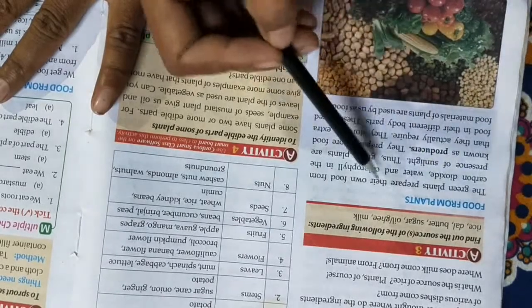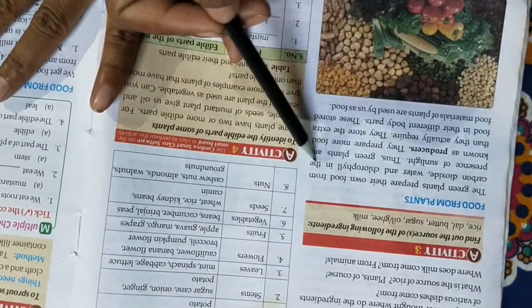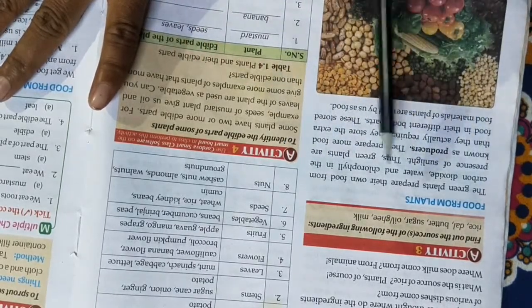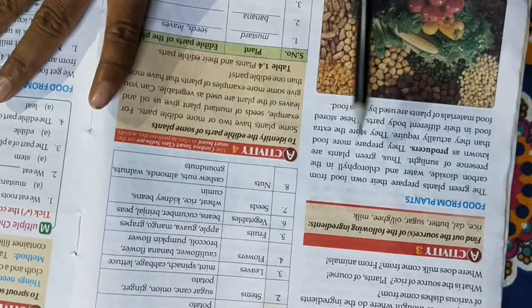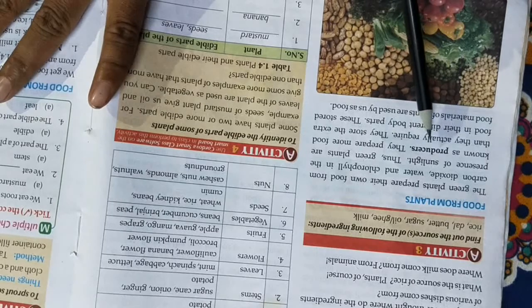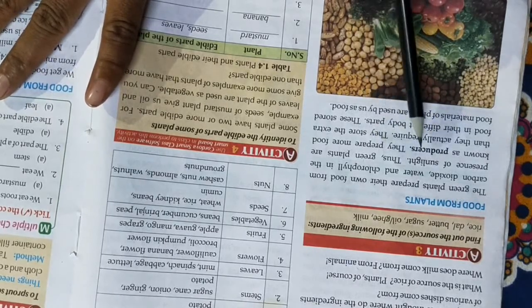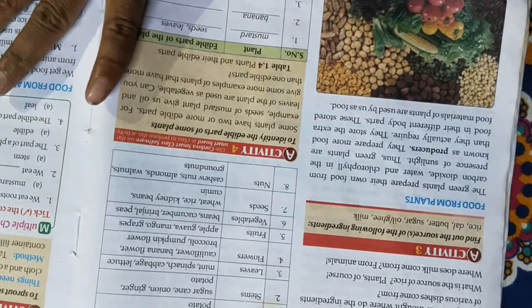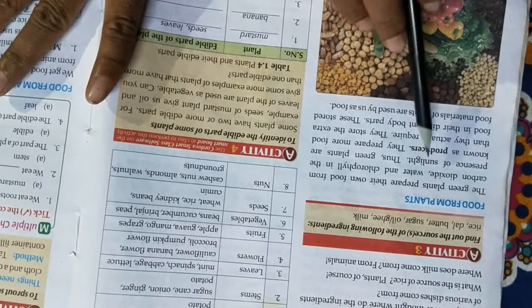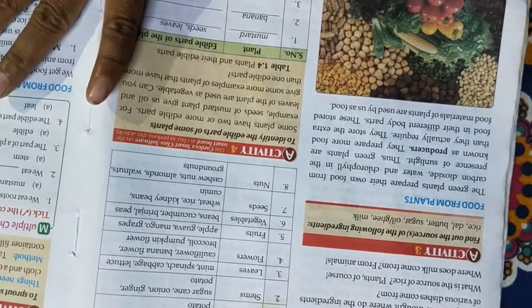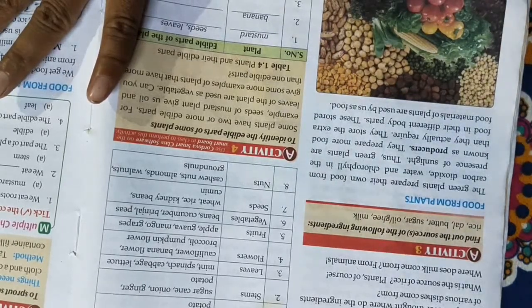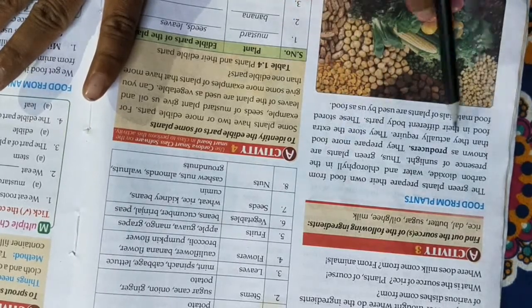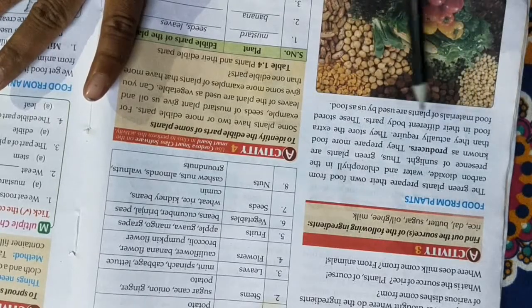Food from plants: The green plants prepare their own food from carbon dioxide, water, and chlorophyll in the presence of sunlight. This is why green plants are called producers. Green plants prepare more food than they actually require.